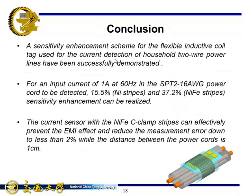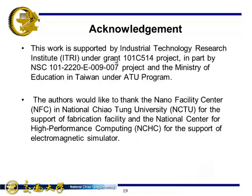In conclusion, a sensitivity enhancement for the flexible inductive coil tag for the current detection of household 2-wire power lines has been successfully demonstrated. For an input current of 1 amp at 60Hz in the 2-wire power cord, 15% in nickel stripes and 37% in nickel-iron stripes sensitivity enhancement can be realized. Besides, the magnetic C-clamp stripes can also effectively prevent the electromagnetic influence and reduce the measurement errors.